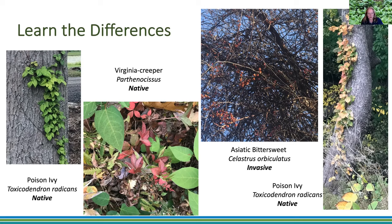Notice the growth habit of poison ivy — it runs up the side of a tree. Look at bittersweet: it strangles the tree, grows over the tree, drags it down. Asiatic bittersweet is invasive — it's like the kudzu of the north. Here in the northeast, with the winds, bittersweet helps pull the trees down. Don't confuse either of them with Virginia creeper, which is a native plant. It's a little aggressive — you might not want it on your brick walls as it'll eat out your mortar — but it's a lovely native plant. Just don't eradicate it.